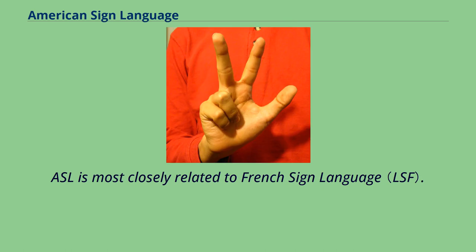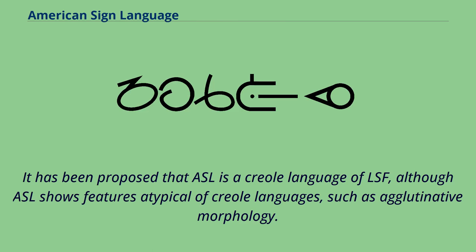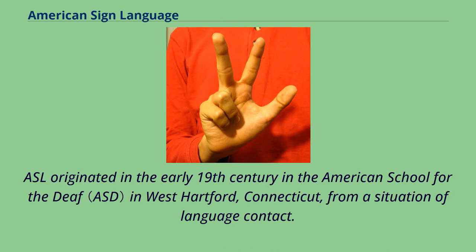ASL is most closely related to French Sign Language. It has been proposed that ASL is a creole language of LSF, although ASL shows features atypical of creole languages, such as agglutinative morphology. ASL originated in the early 19th century in the American School for the Deaf in West Hartford, Connecticut, from a situation of language contact.